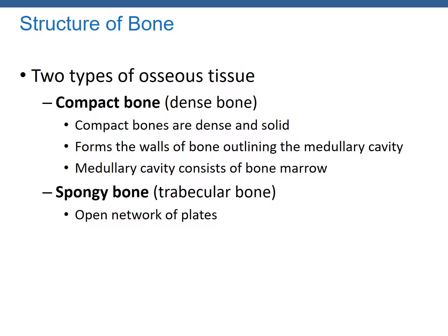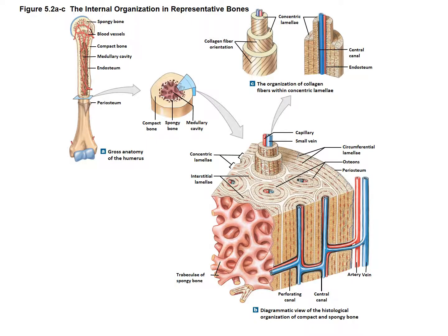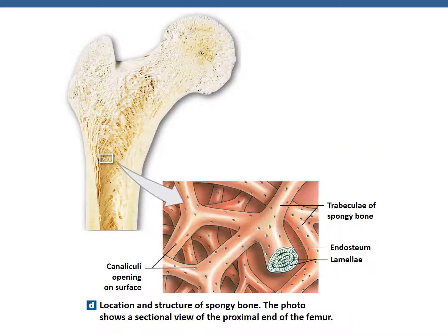The structure of bone comes in two types. Compact bone is dense and solid, forming the walls outlining the medullary cavity, which contains bone marrow where blood cells are made. Spongy bone, or trabecular bone, is an open network of plates typically found on the ends of bones, whereas compact bone is found in the central diaphysis or shaft. Spongy bone has a branch-like structure, gradually thickening over time to become compact bone. The ends of bones are more spongy bone, while the shaft is more compact.